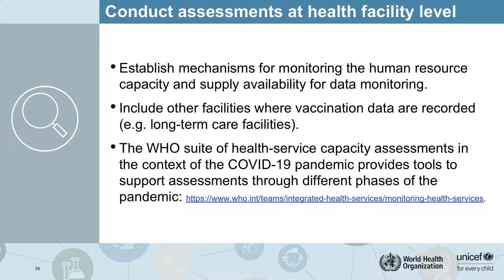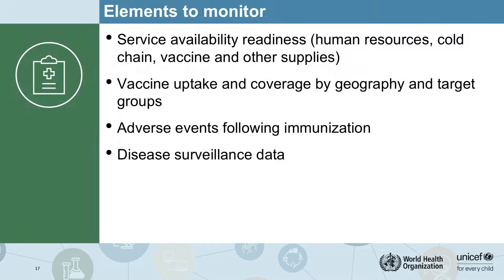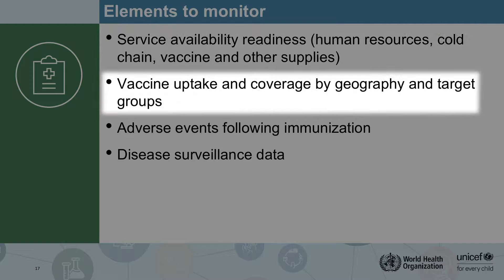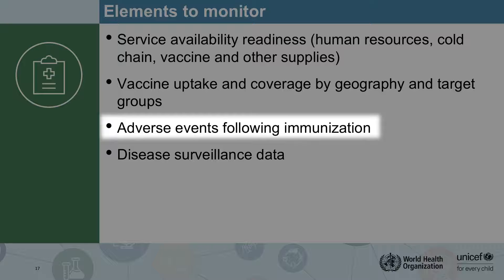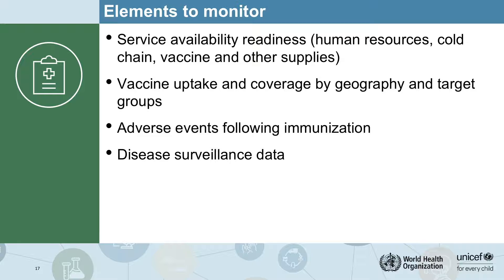It is also important that countries continuously assess the readiness and capacity of health facilities to provide COVID-19 vaccines. There is a suite of capacity assessments in the context of the pandemic that you can use to measure that readiness. In summary, the main data domains to monitor include service availability and readiness — human resources, cold chain, vaccine and other supplies — vaccine uptake and coverage by geography and target groups, any adverse events following immunization, and disease surveillance data.